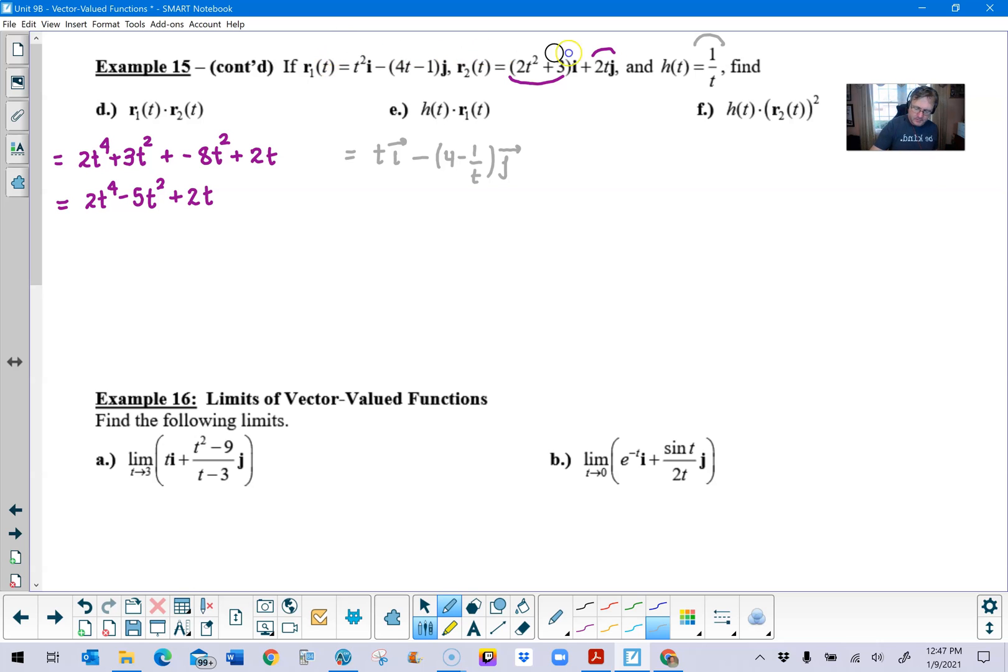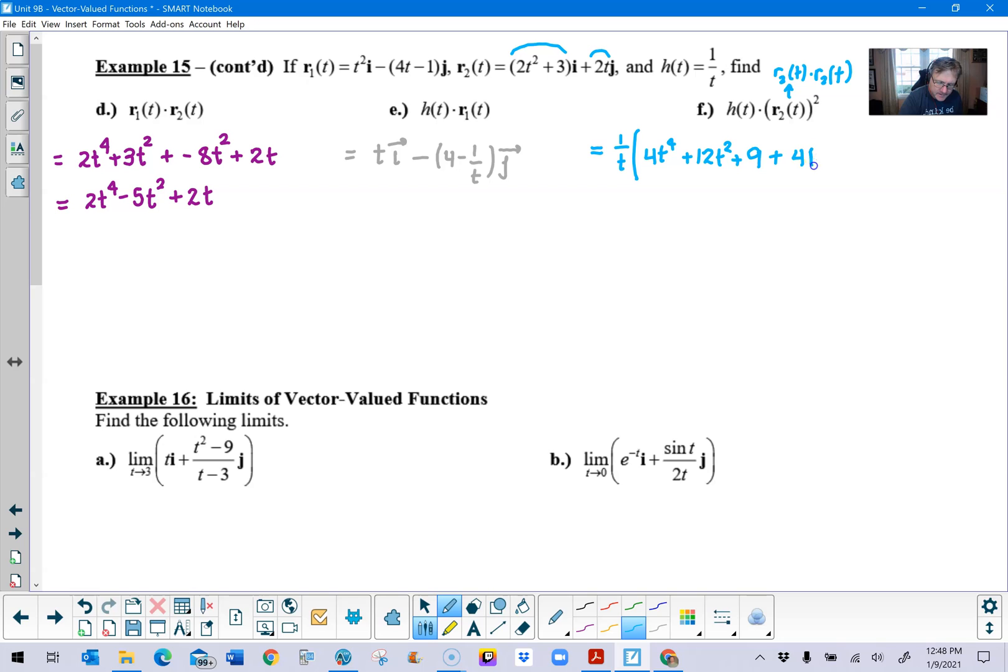Part f might be the trickiest one of all. I'm going to clear my markup up here, switch to a different color that you can hopefully see. And now we see that we have the function h multiplied by the vector r2 squared. Order of operations are still in play. So we need to understand that the 1 over t is going to sit and wait and let the r2 multiply by itself. In other words, you've got a dot product right off the bat here with r2. So you would say the r2 here has this 2t squared plus 3 that's going to multiply by itself. That's going to be 4t to the 4th plus 12t squared plus 9. Hopefully you guys all see that. Just expanding this multiplied by itself. And then we're going to do the same thing with the 2t, which is going to be a little easier. Multiplying the 2t by itself, you get 4t squared.